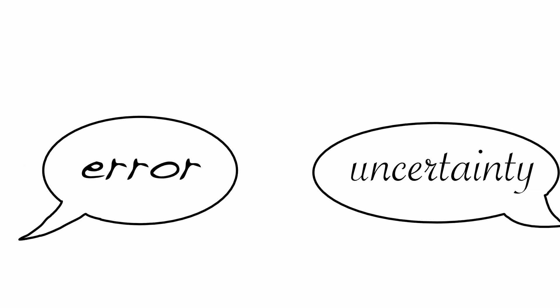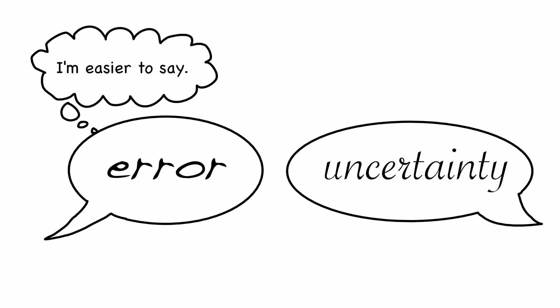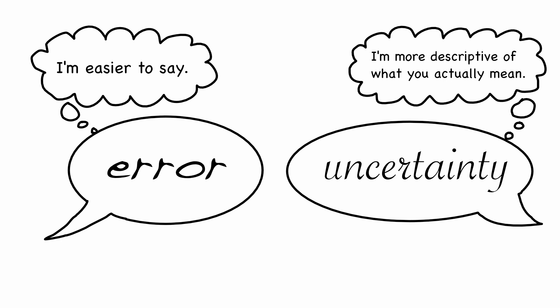Some say 'error' when they're in a hurry, since 'uncertainty' has too many syllables. Don't sweat the difference.